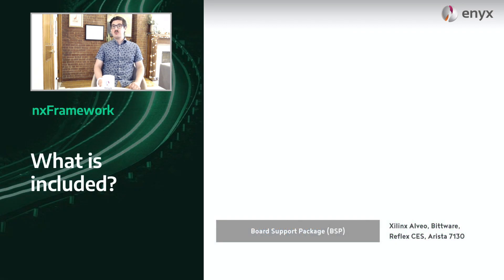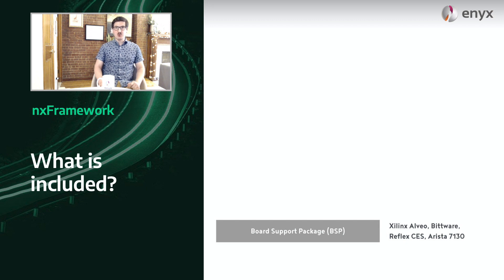So when we created ENIX Framework, the first thing that we really wanted to include was a hardware abstraction layer. That was to make sure that our hardware engineers would not have to worry about the underlying hardware that the application they were working on was going to be deployed on.